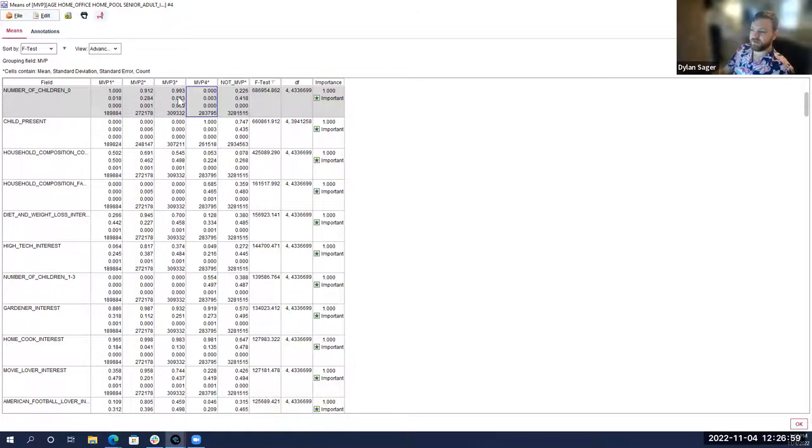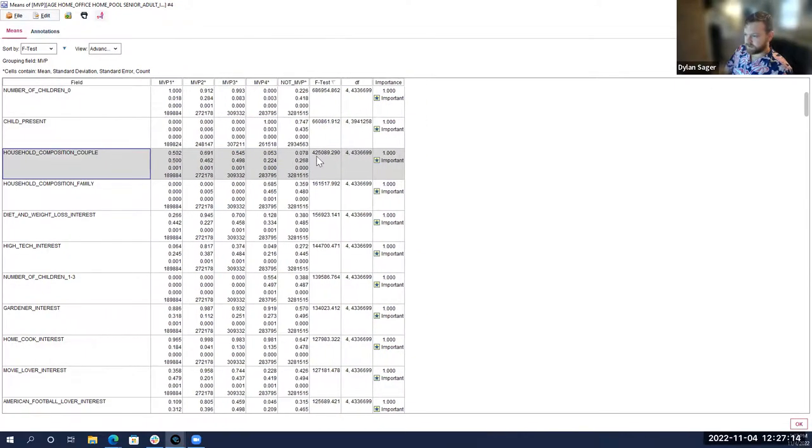There's three groups that seem to be somewhat together. One group that's very different. Within that group too we can see they have children and they're married. This family household composition means they're married and they have one or more children. It's about 68.5% of people in this group, which is way over index on the population average. Whereas couple, that means they're married and do not have children.